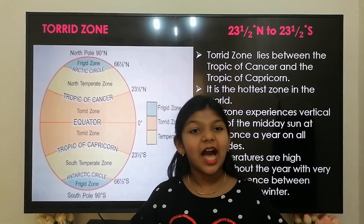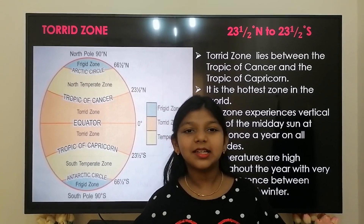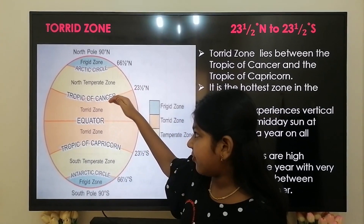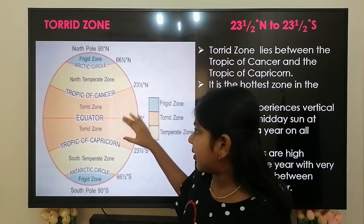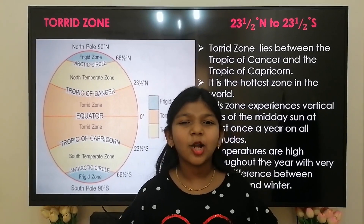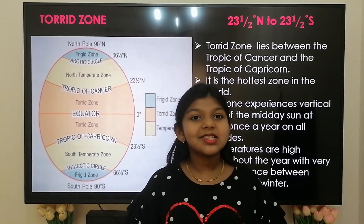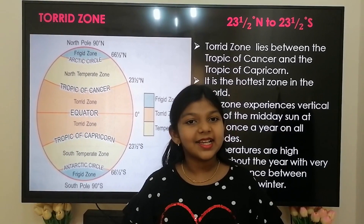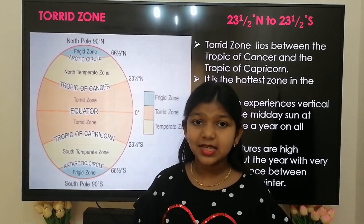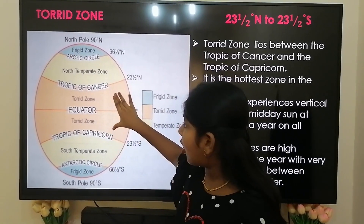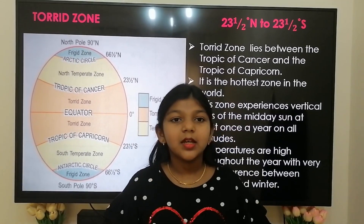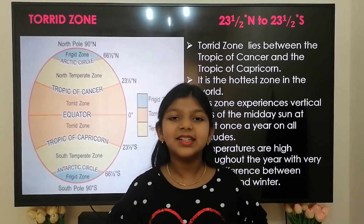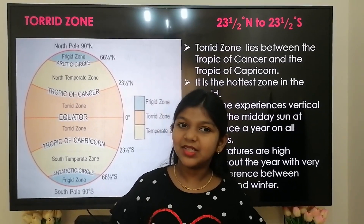Torrid zone lies between 23.5 degrees north to 23.5 degrees south — between the Tropic of Cancer and the Tropic of Capricorn. It is the hottest zone in the world. This zone experiences the vertical rays of the midday sun at least once a year at all latitudes. Temperatures are very high throughout the year with little difference between summer and winter.